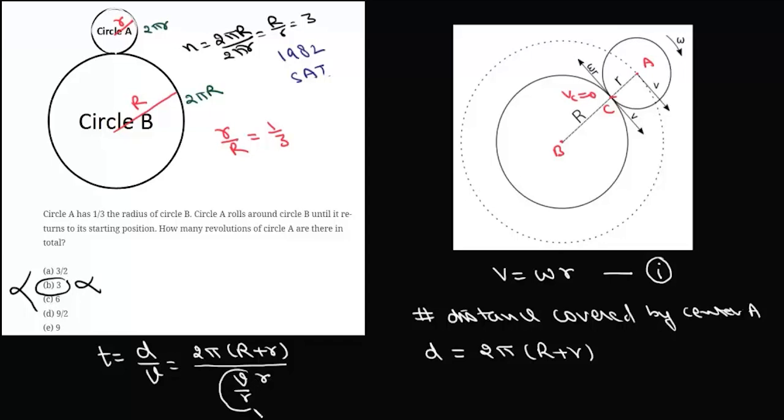Now V upon r is nothing but angular velocity Omega. So we can write this t as 2π(R+r) upon Omega*r. We will take Omega on the left-hand side. We can write Omega*t, and Omega*t is nothing but Theta since there is no angular acceleration. This equals 2π(R+r) upon r. Theta is the angle rotated by this circle.